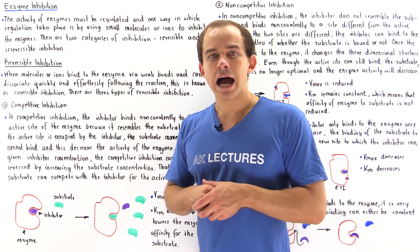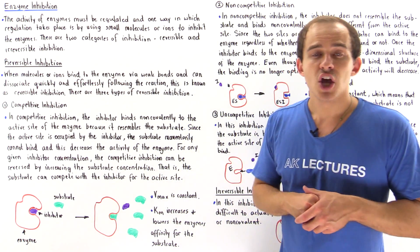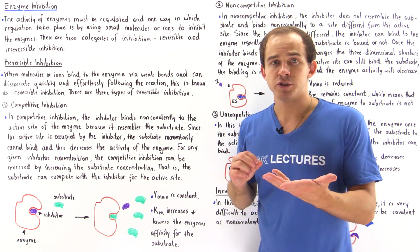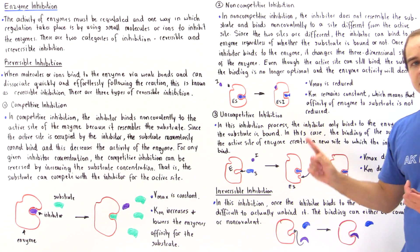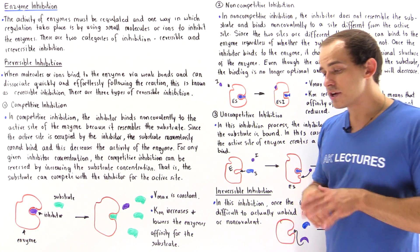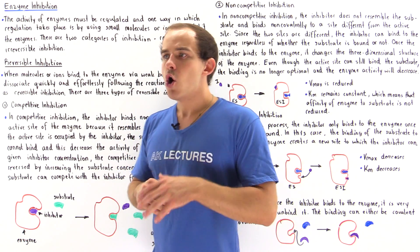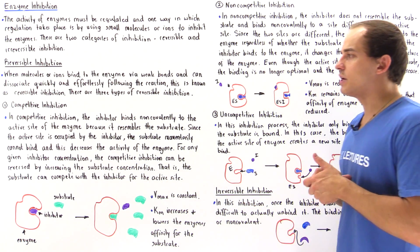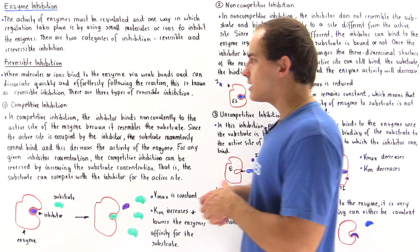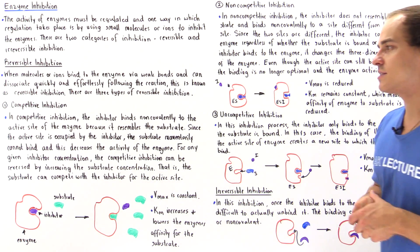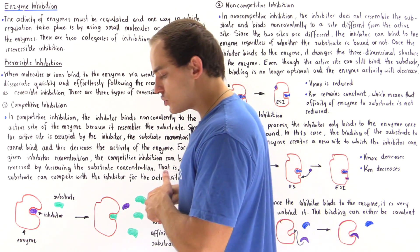There are three different types of reversible inhibition processes: competitive inhibition, non-competitive, and uncompetitive. There is actually a fourth type known as mixed inhibition, but we're not going to focus on that one in this lecture. Let's begin by discussing each one of these processes, beginning with competitive inhibition.